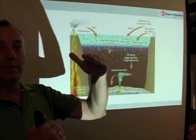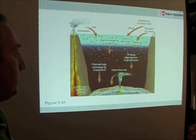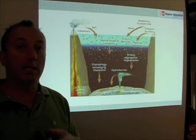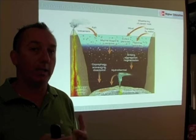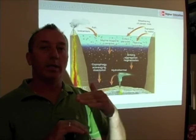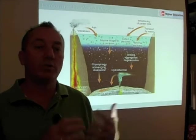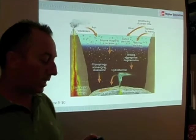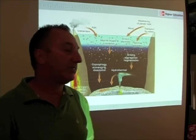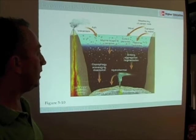As sediments pile up on the seafloor, they're put under greater pressure and eventually become rock — a process called lithification. In the meantime, as they're piling up, they may be worked on by chemical processes. The piling up may create different chemical reactions, and organisms may also interact with those sediments. Those chemical and biological transformations that happen as sediments sit on the seafloor are called diagenesis.